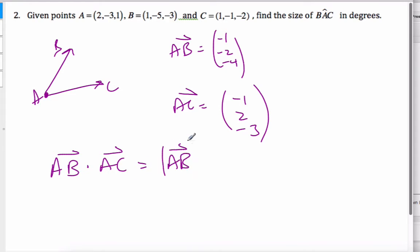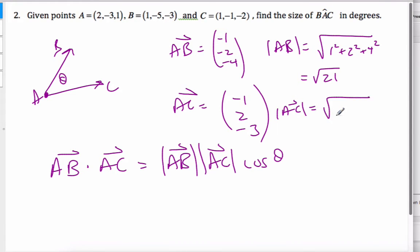Which is going to be AB, AC, cosine of theta. I am looking for this angle theta here. So finding the magnitude of AB is square root of 1 squared plus 2 squared plus 4 squared. I've eliminated the negatives because I know when I square them it goes away. So it's 16, 17, and 4 is square root of 21. Whereas the magnitude of AC is 1 squared plus 2 squared plus negative 3 squared, which gives me the square root of 14. And so I know this is square root of 21 times square root of 14 cosine of theta.